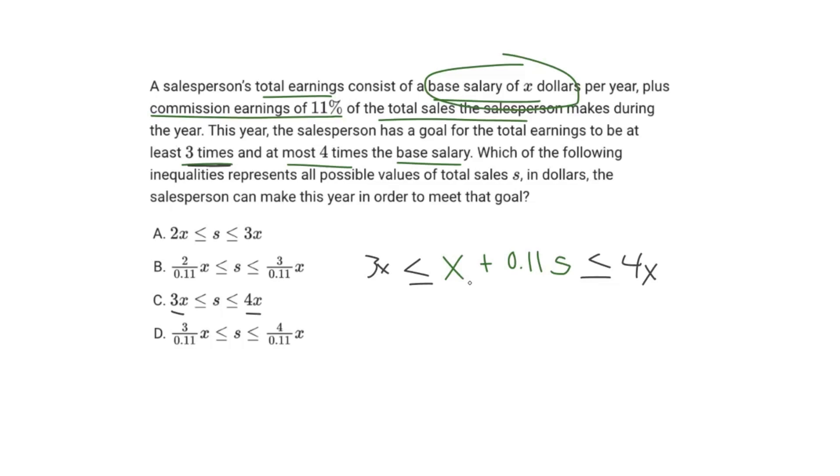Therefore, in order to actually get an answer that matches up with one of the answer choices, we need to simplify this inequality. So here, very simple, we can subtract X on all sides.